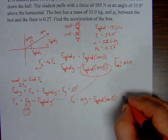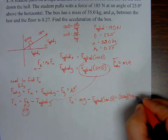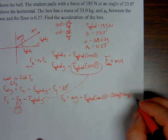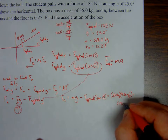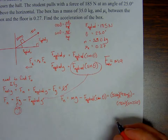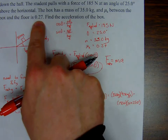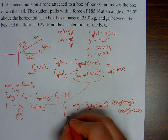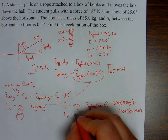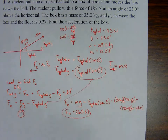Plugging in the values using three significant figures: normal force equals 35 kilograms times 9.81 m/s² minus 185 newtons times sine of 25 degrees, which gives 265 newtons. Now I can calculate the force of kinetic friction: coefficient of kinetic friction times normal force = 0.27 × 265 newtons = 72 newtons. That's the force working against the applied force in the x-direction.